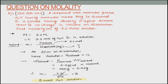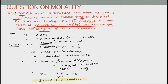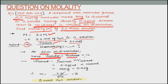Let us solve a question on molality from JEE Advanced 2014. A compound H2X with molar mass 80 g/mol is dissolved in a solvent of given density. Assume no change in volume on dissolution. We need to find molality of a 3.2 molar solution. That means 3.2 mol of H2X in 1 litre of solution. Since there is no change in volume, volume of solution = volume of solvent = 1 litre.